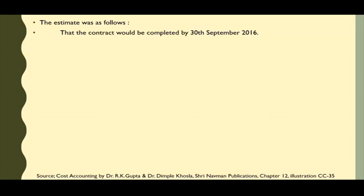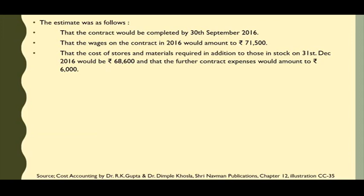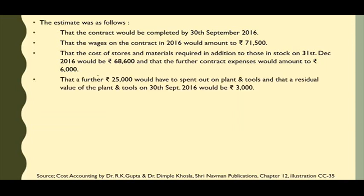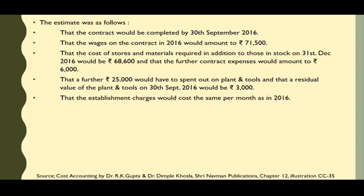Aage diya hai ki contract jo hai woh 30th September ko khatam ho jayega. Wages jo hai woh 71,500 or lagengi. Cost of store and material required in addition to those in stock: pehle se stock me tha woh to lagega, plus uske alawa 68,600 ka or lagega. And the further contract expenses would amount to rupees 6,000. Further 25,000 rupees would have to be spent out on plant and tools — pehle 6,200 ka plant bacha tha, additional 25,000 ka lagega — aur usme se bachega 3,000 ka. Establishment charges would cost the same per month as in 2016.